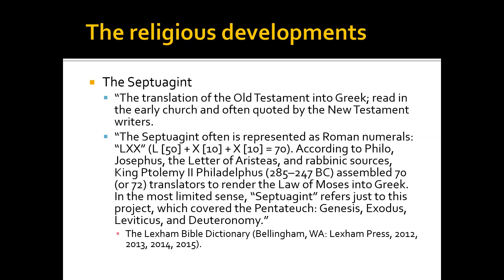In addition to political developments, there were significant religious developments during this time. The Septuagint — the translation of the Old Testament into Greek — was read in the early church and often quoted by New Testament writers. It is represented by the Roman numerals LXX, where L stands for 50 and X stands for 10, equaling 70. According to Philo, Josephus, the letter of Aristeas, and rabbinic sources, King Ptolemy of Philadelphus assembled 70 — or possibly 72 — translators to render the law of Moses into Greek. In its most limited sense, the Septuagint refers just to this project, which covered the Pentateuch — Genesis, Exodus, Leviticus, and Deuteronomy — though people often refer to it as the entire Greek Old Testament.